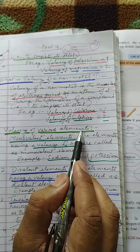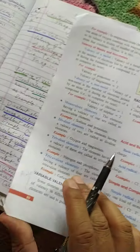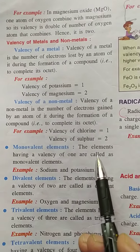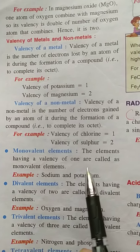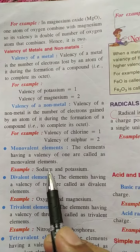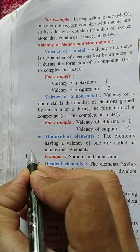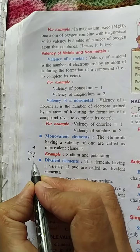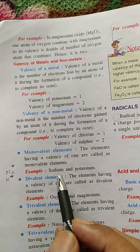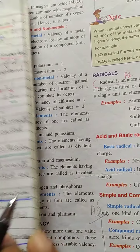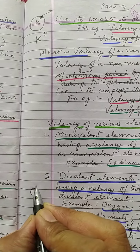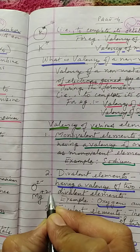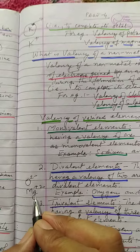Now let us see the valency of various elements. There are monovalent elements, which have a valency of one. For example, sodium has a valency of one and potassium also has a valency of one. Then we have divalent elements — oxygen is divalent with a valency of two, and magnesium is also divalent with a valency of two.